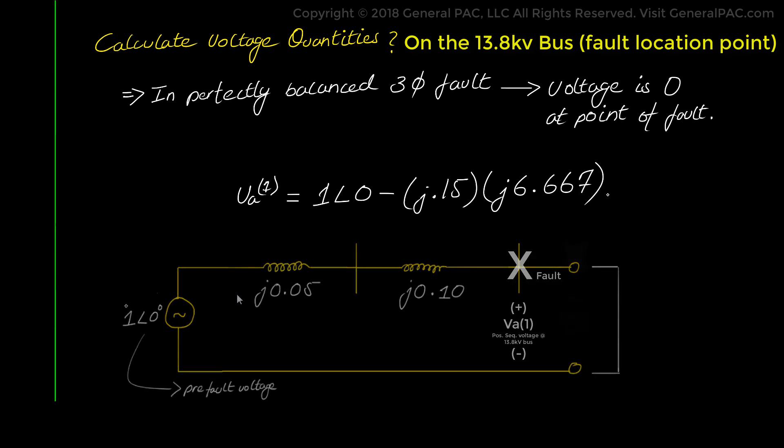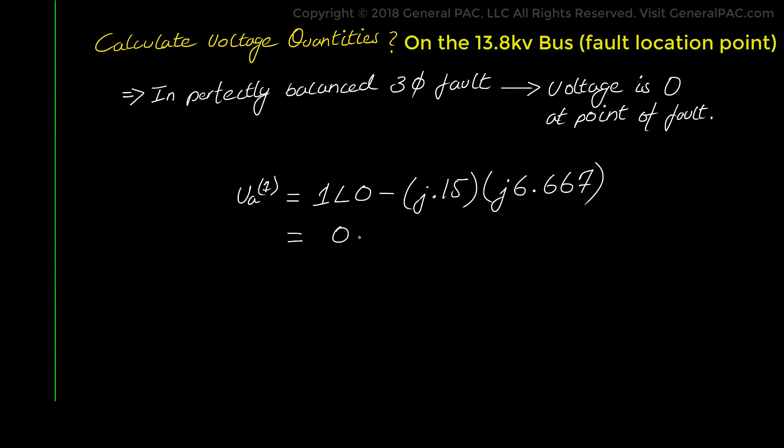Now that source voltage minus the voltage drop across the total impedance, if you calculate that out, that simply equals zero per unit. So again the negative and zero sequence components are already zero because it's a perfectly balanced system and the positive sequence component at the point of the fault on the 13.8 kV bus is also zero as we point out with this calculation.